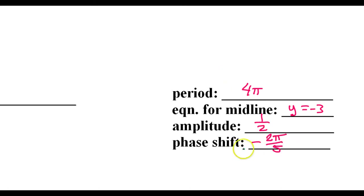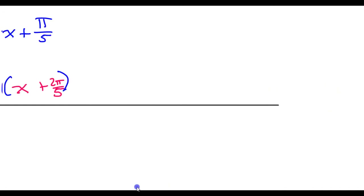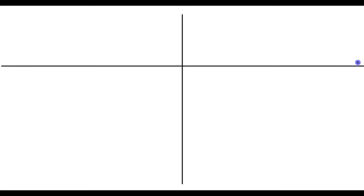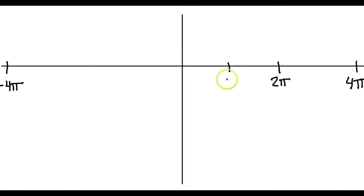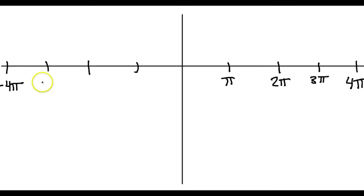Armed with all this information, it's time to graph the function. Let's start with the period, which is 4π. I'll throw up a y-axis. Since the period is 4π, I'll come over and mark 4π, then negative 4π. Going halfway gives 2π, half of that gives π, and 3π follows. On the negative side: negative 3π, negative 2π, and negative π. Let's also put some marks on the y-axis — 1 and 2 going up, and negative 1, 2, 3, 4, 5 going down.